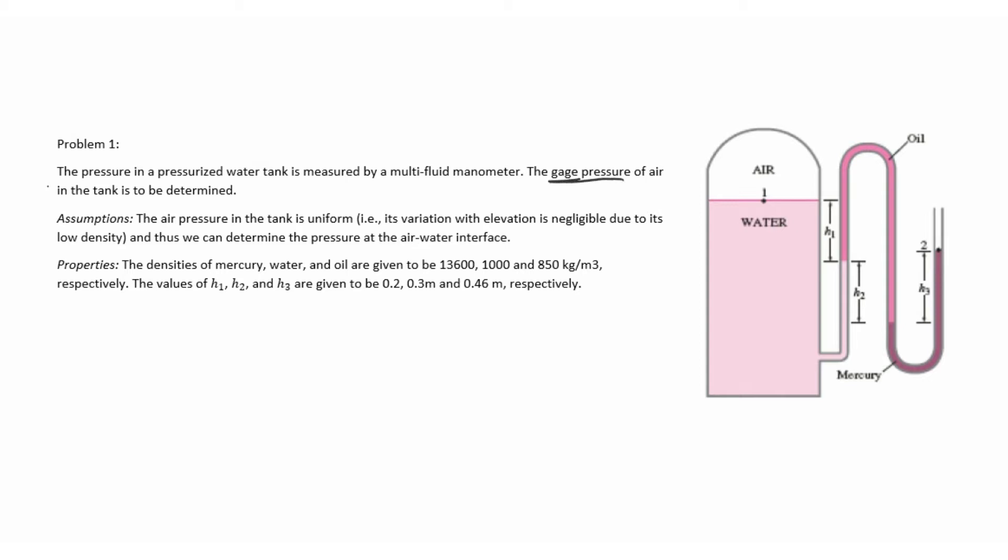So there are three fluids in the water tank system: oil, water, and mercury. Respectively, their densities are 13,600, 1000, and 850 kilograms per meter cubed. The heights of the columns are 0.2 meters for h1, 0.3 meters for h2, and 0.46 meters for h3.